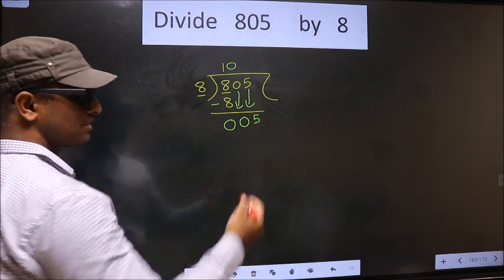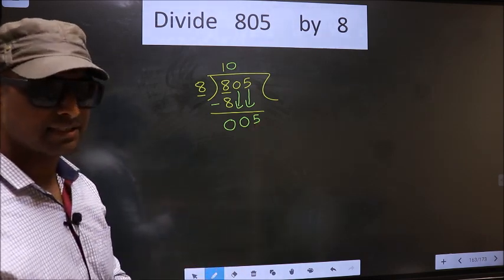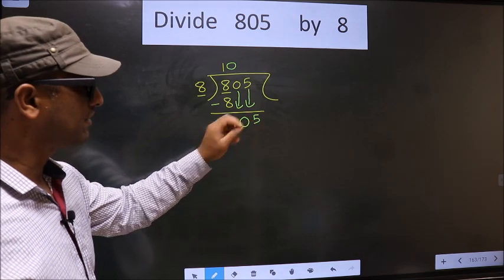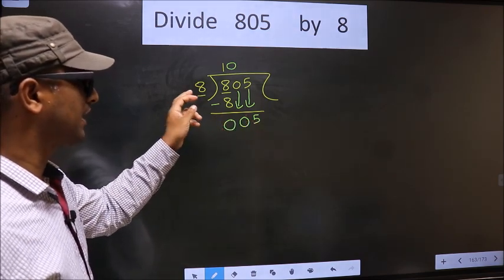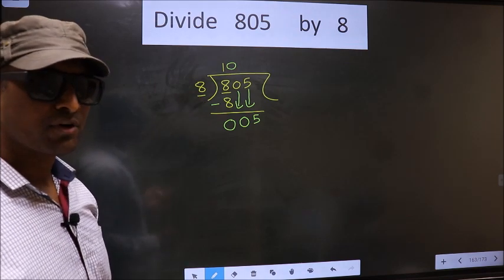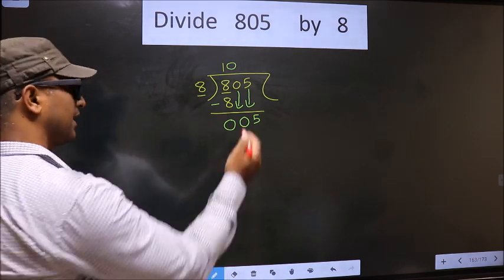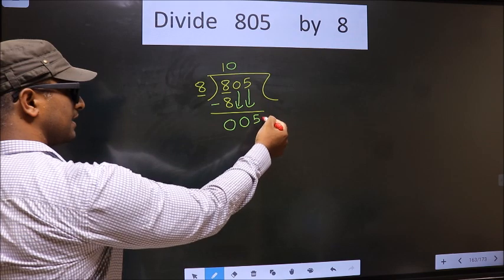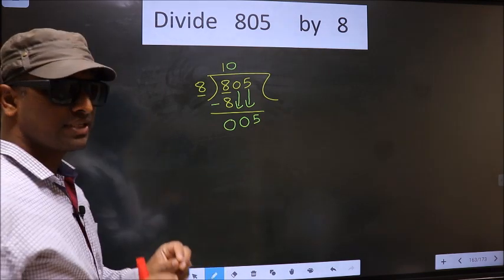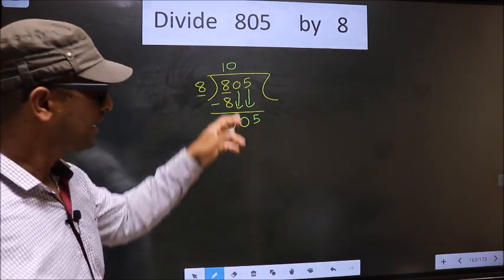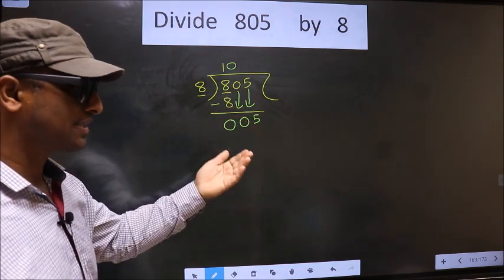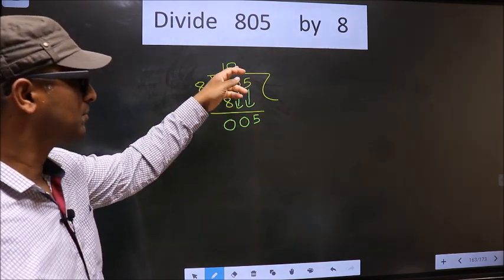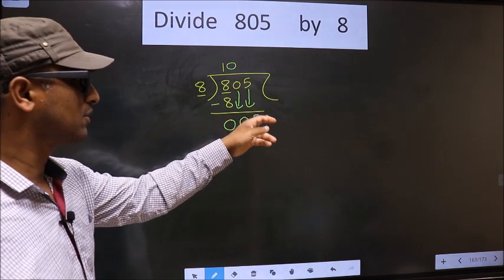This is where the mistake happens. Here we have 5. 5 is smaller than 8, so what many do is they directly put a dot and take 0 here, which is wrong. Just now you brought the numbers down, and in the same step you want to put a dot and take 0 here.